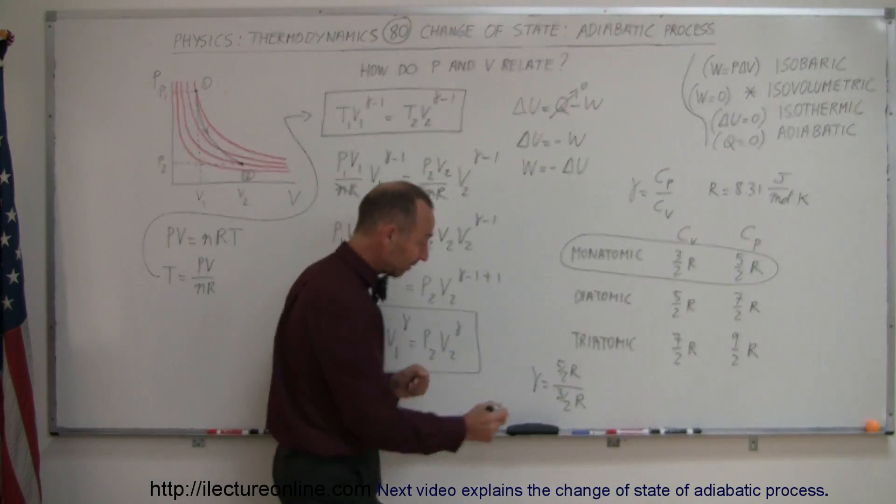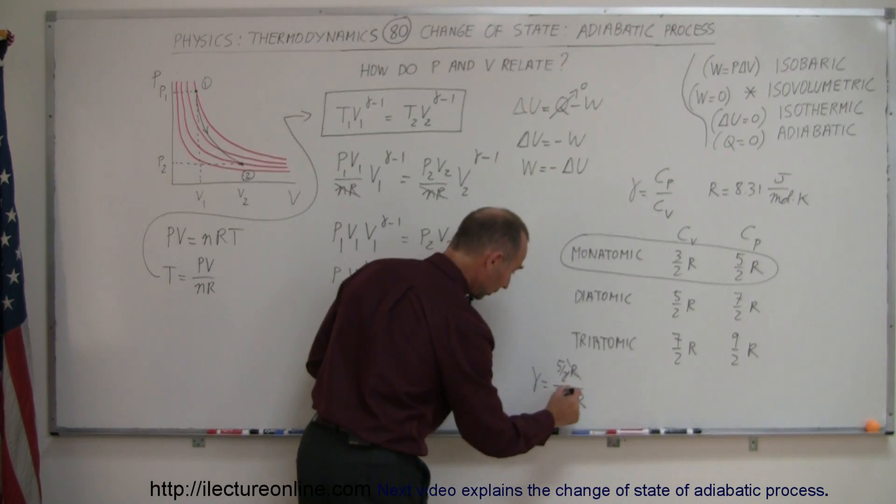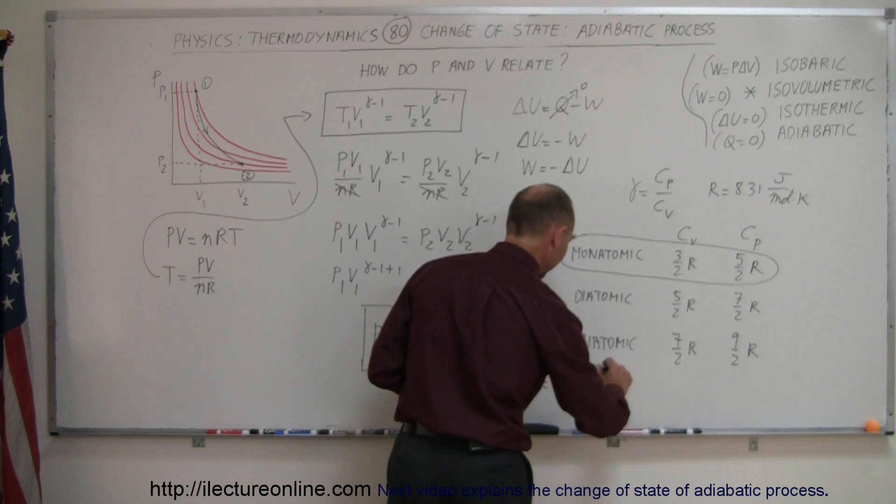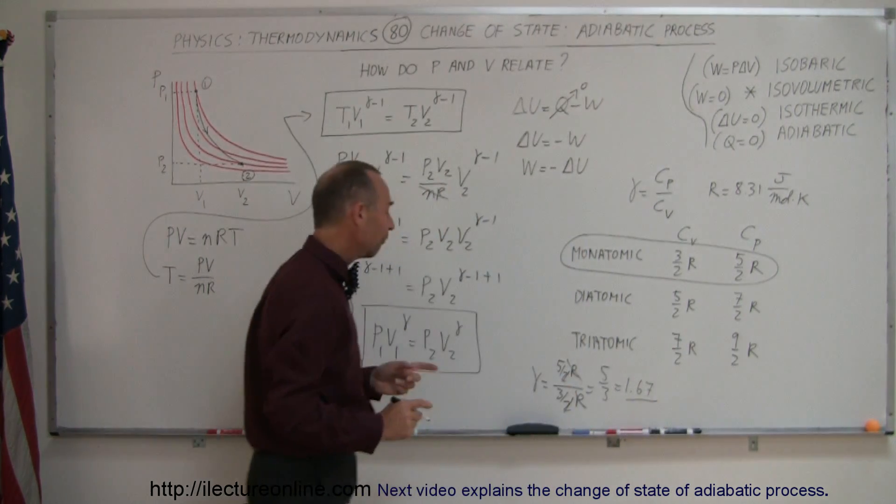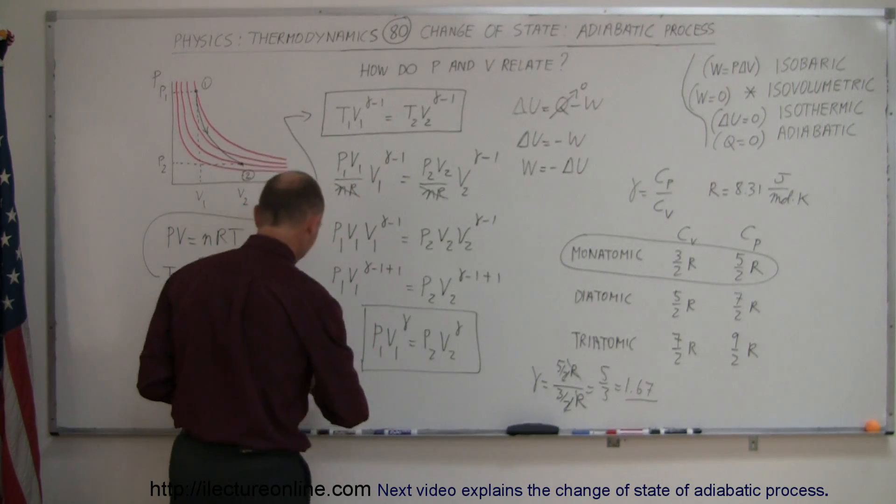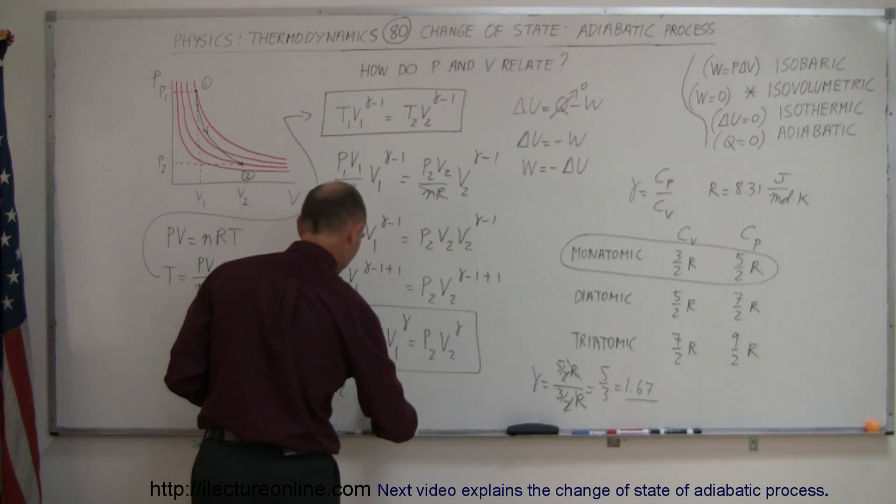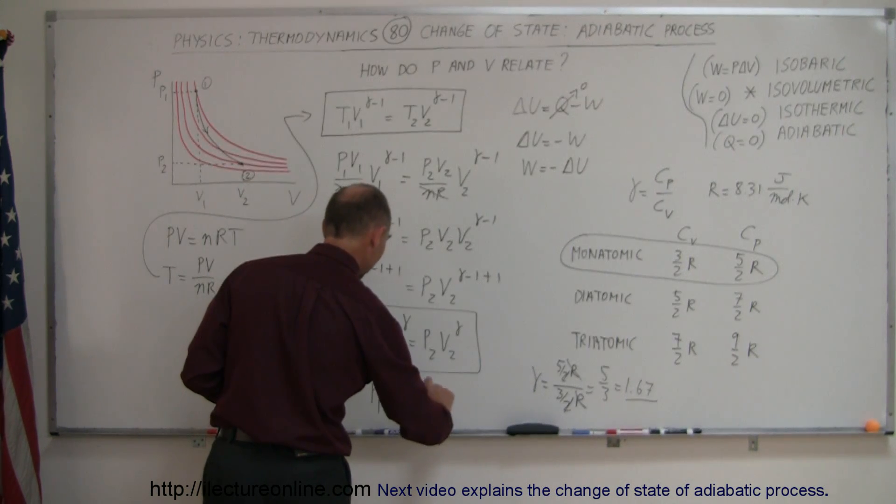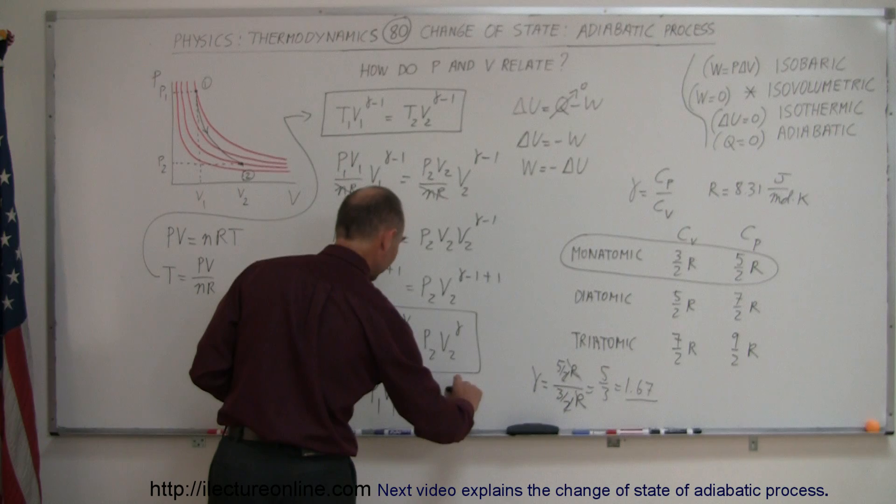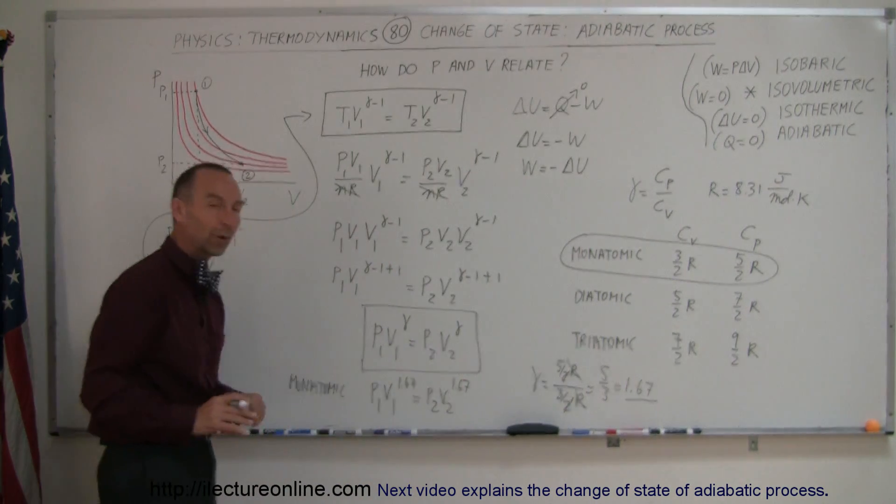Notice then that the r's will cancel out and the divide by 2's will cancel out, so we end up with 5 over 3, which is equal to 1.67. So for a monatomic gas, this equation becomes p1 v1 to the 1.67 equals p2 v2 to the 1.67.